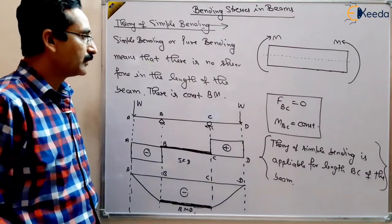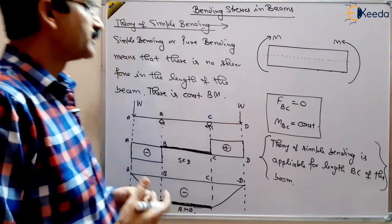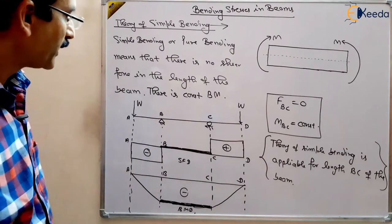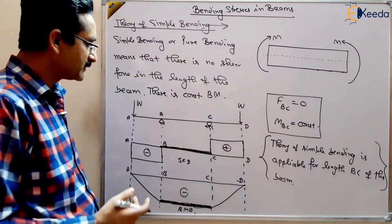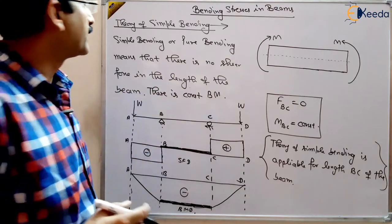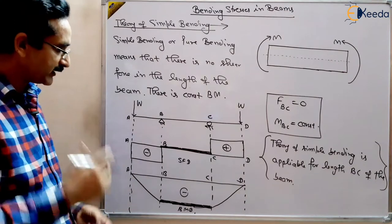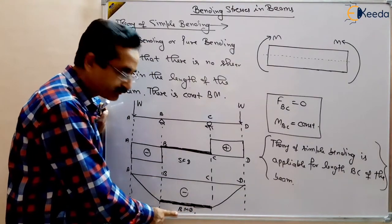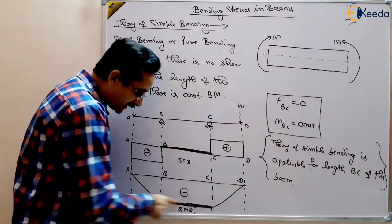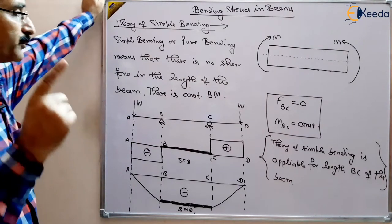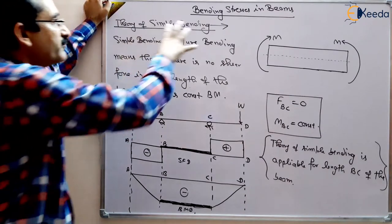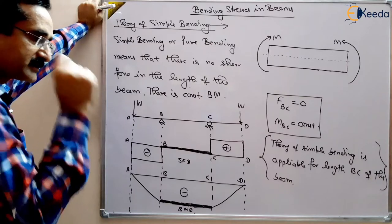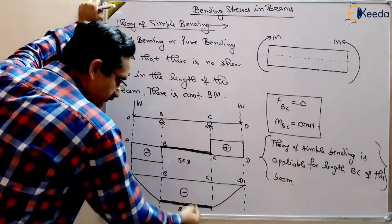We have different types of beams like cantilever beams and simply supported beams where this condition may not always prevail. However, something useful can still be observed. When the shear force is zero, the bending moment is maximum. We have to design the beam for maximum bending moment — the beam is weak in normal stresses, and failure occurs at the point of maximum bending moment where shear stress is zero.